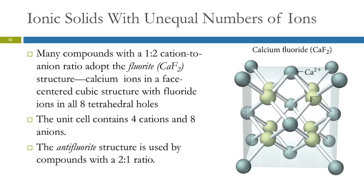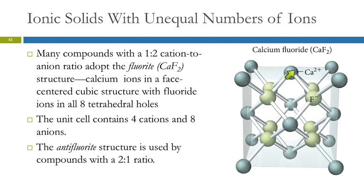What if you have an unequal number of ions? In calcium fluoride there are two fluoride ions for every calcium ion. Many compounds with a one-to-two cation-to-anion ratio adopt the fluorite structure, named after this mineral. The calcium ions form a face-centered cubic structure, and the fluoride ions fit into all eight of the tetrahedral holes, giving a unit cell with four cations and eight anions.